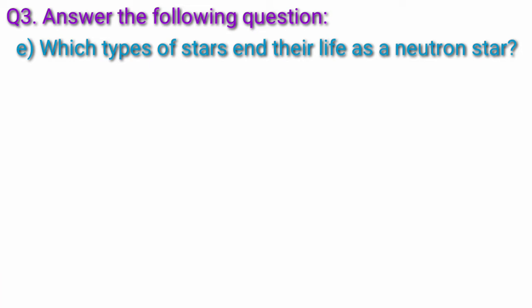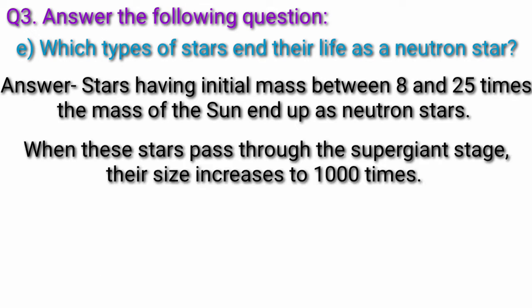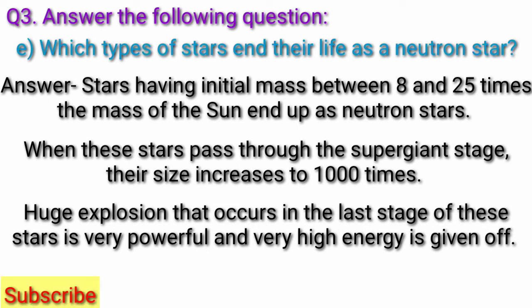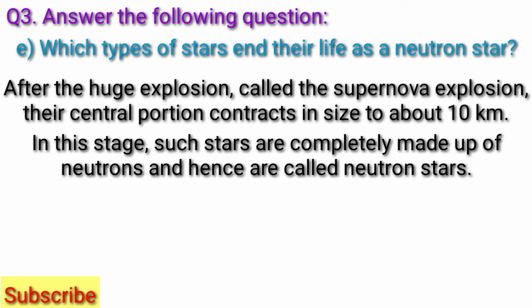Question E, which types of stars end their life as a neutron star? Answer, stars having initial mass between 8 and 25 times the mass of the sun end up as neutron stars. When these stars pass through the super giant stage, their size increases to 1000 times. Huge explosion that occurs in the last stage of these stars is very powerful and very high energy is given off. After the huge explosion called the supernova explosion, their central portion contracts in size to about 10 km. In this stage, such stars are completely made up of neutrons and hence are called neutron stars.